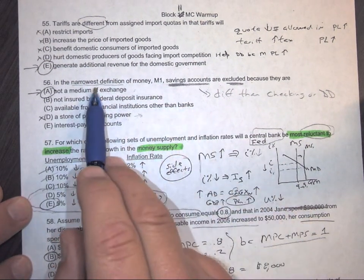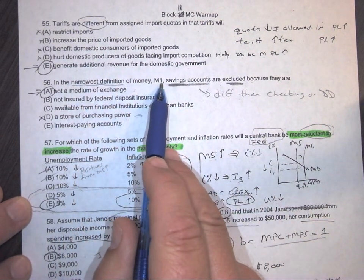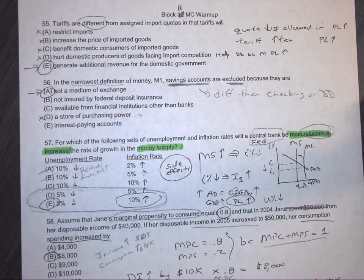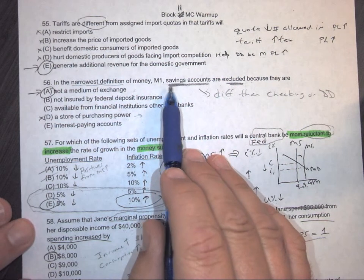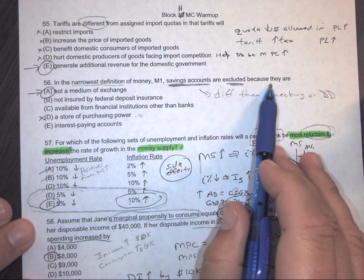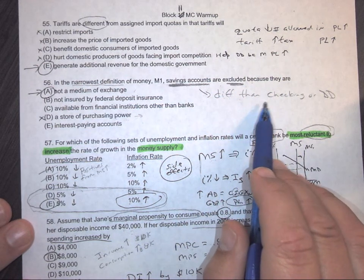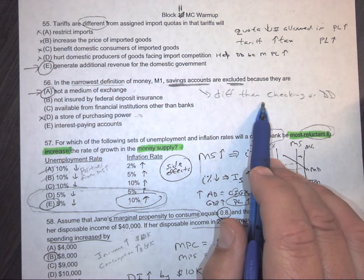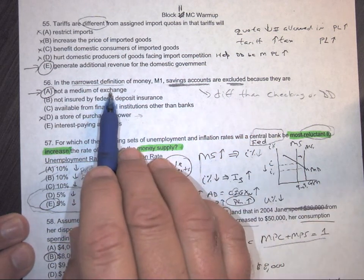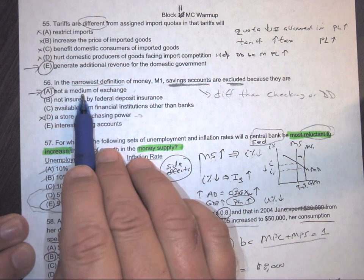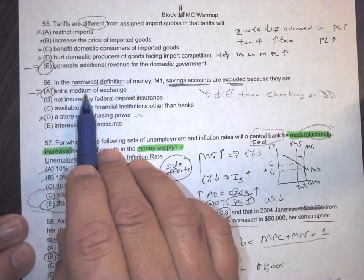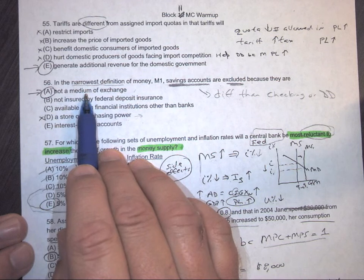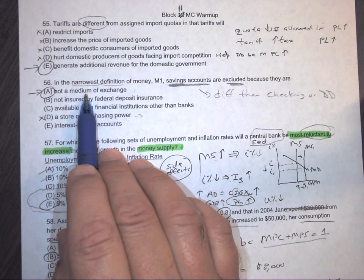All right, 56, in the narrowest definition of money, M1, remember we narrow the money supply down to its components, M1 and M2 and M3. M1 savings accounts are excluded because they're different than checking accounts, aren't they? Okay, savings accounts can have time limits on them where you can't touch it for a year if you get higher interest rates, stuff like that. Okay, savings accounts are also not a medium of exchange. So you can't just go spend your savings account. You have to take the money out first, don't you?